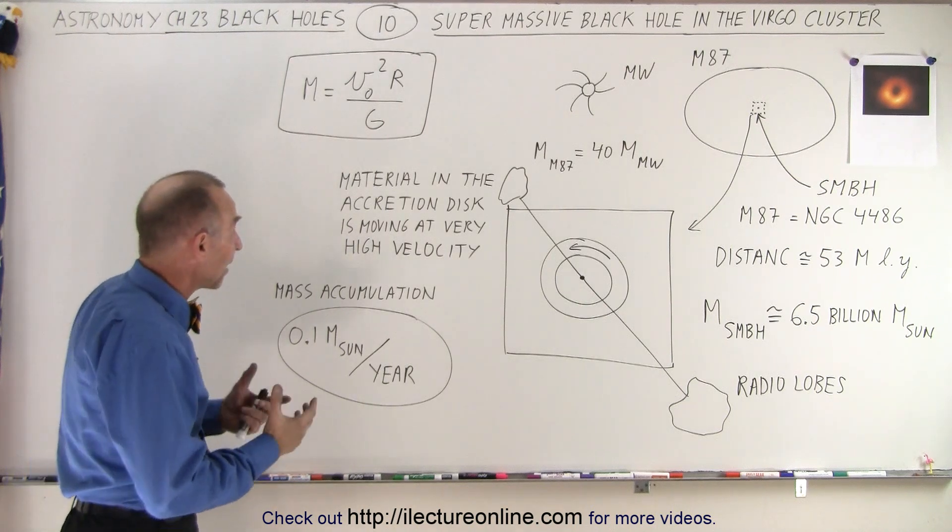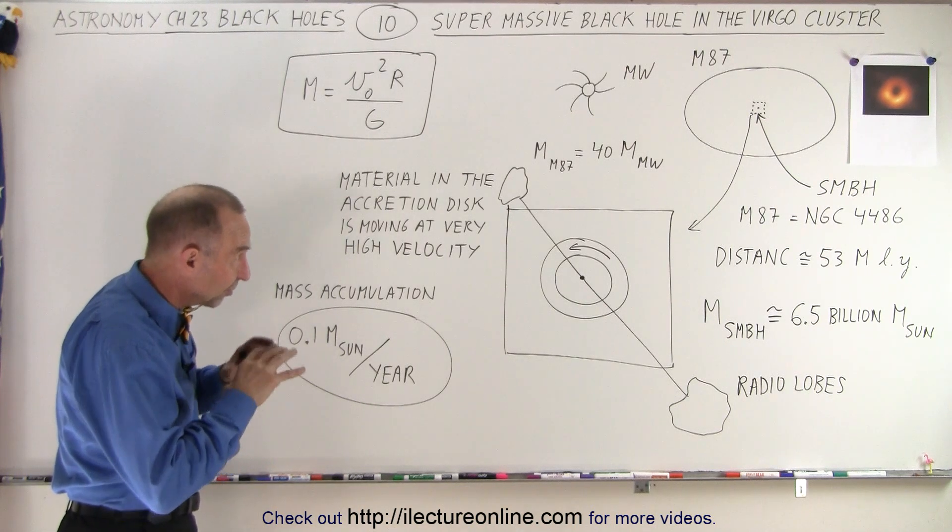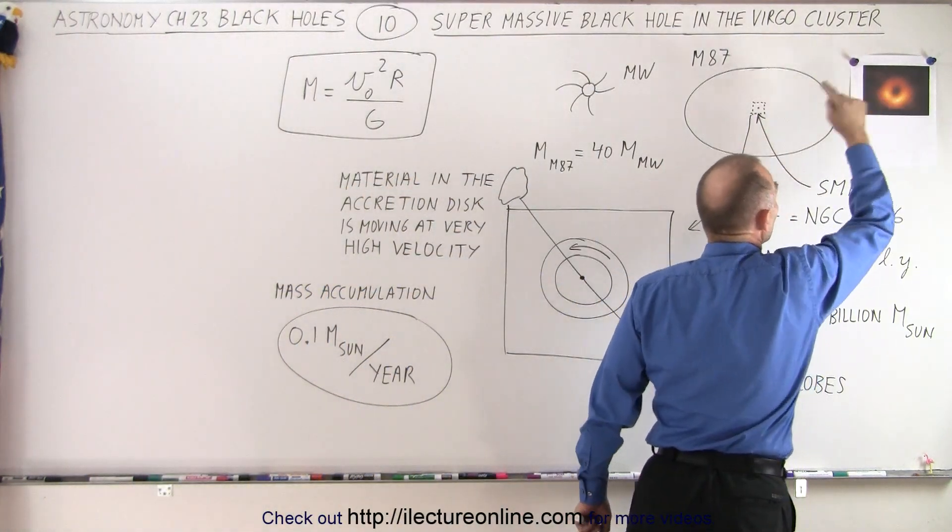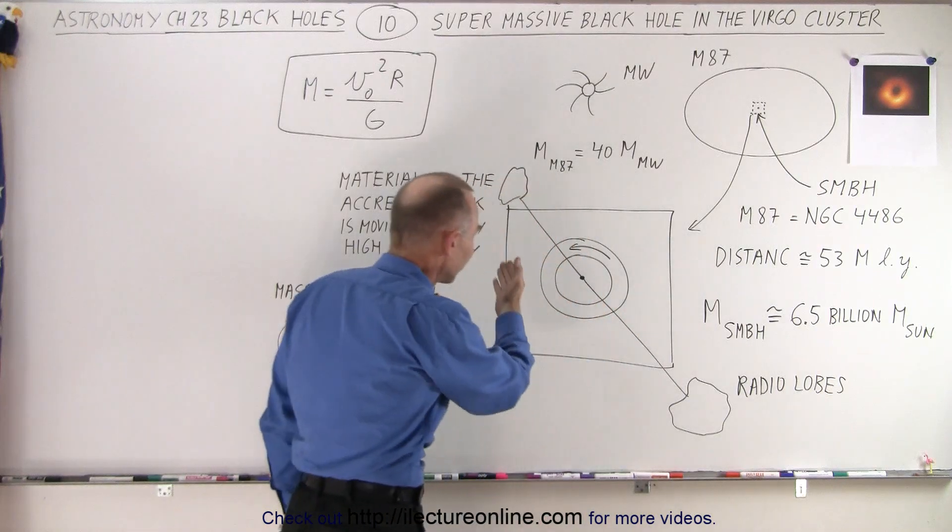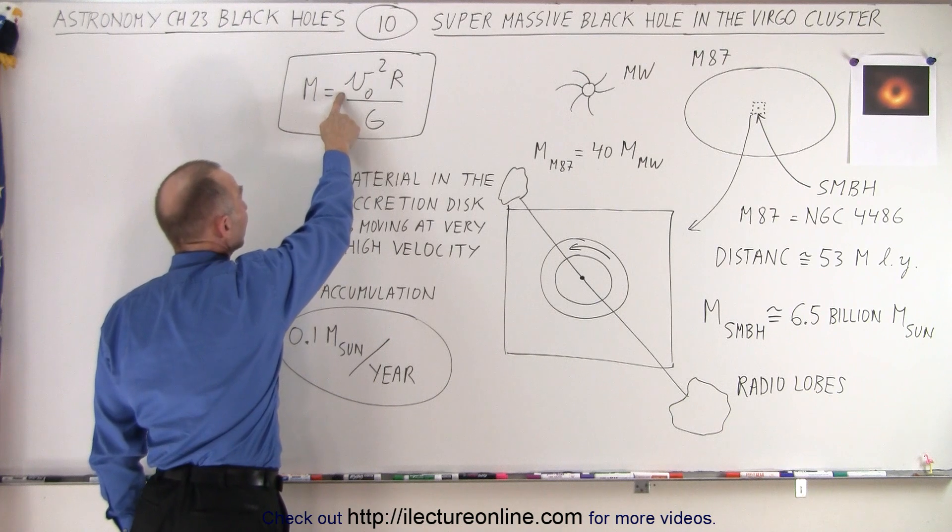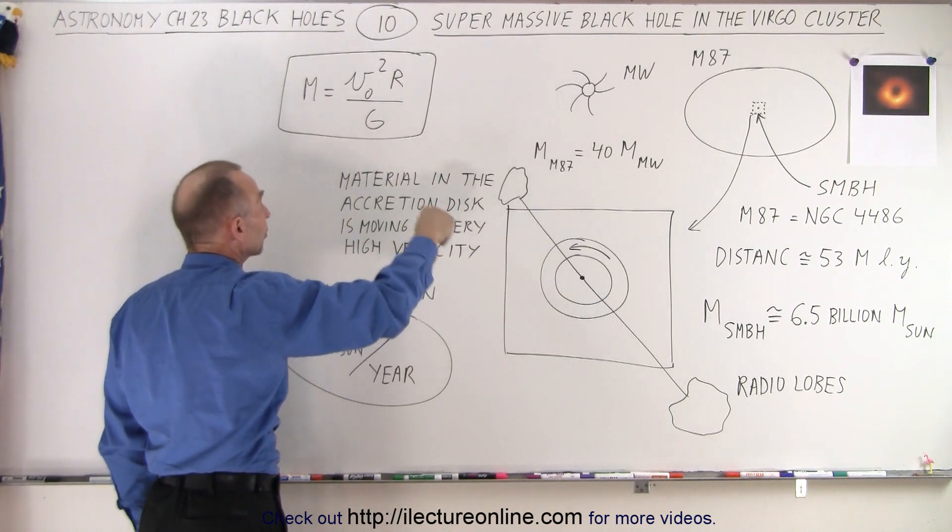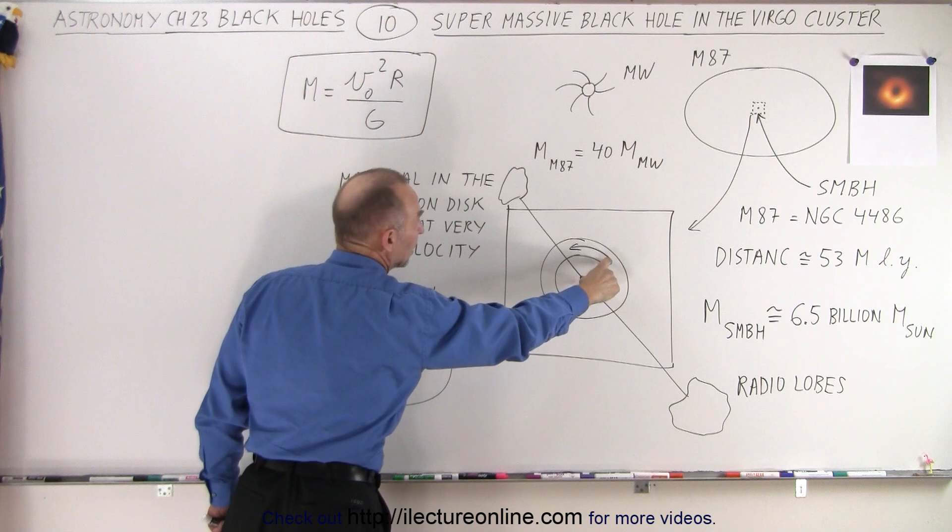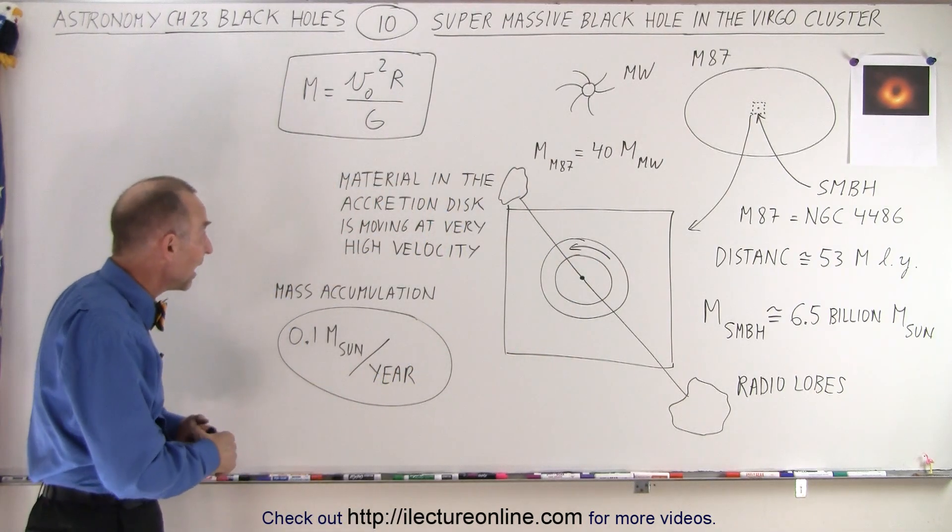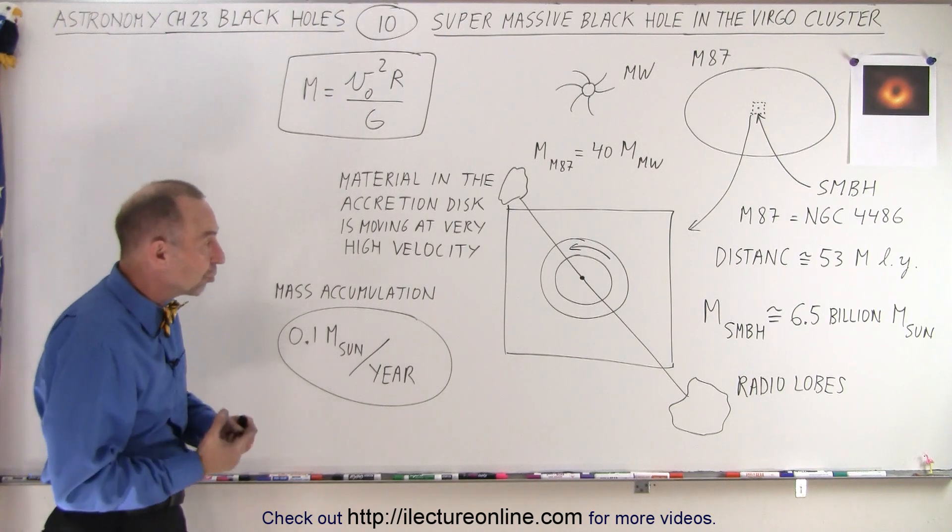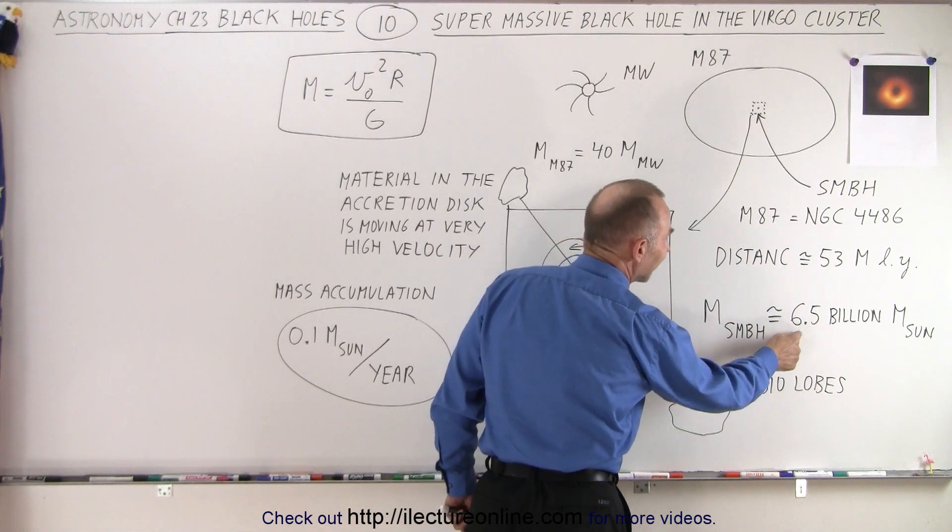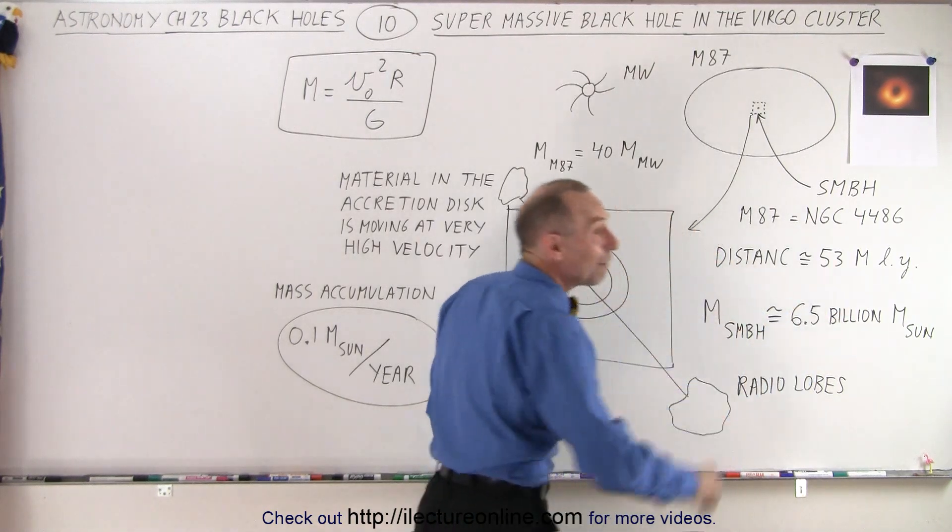Now we measured the mass of that central region based on the speed of the gaseous material in the accretion disk that's rotating very fast going around the black hole. So using the equation where we take the velocity squared of the material in the accretion disk times the radius to the accretion disk from the black hole divided by G, the universal gravitational constant, we understood and realized that the mass of the supermassive black hole is about 6.5 billion times the mass of the sun.